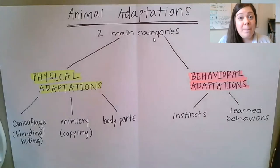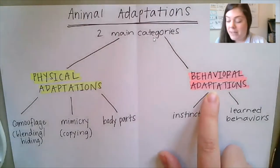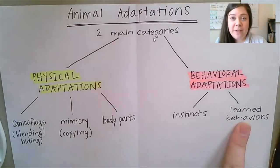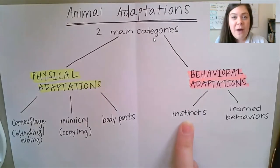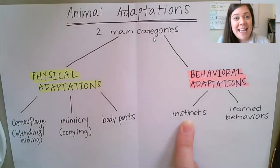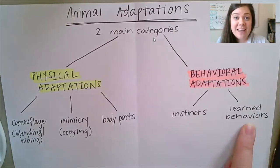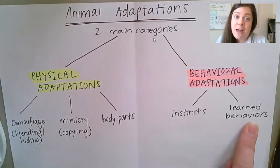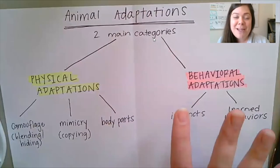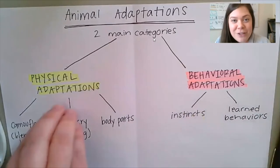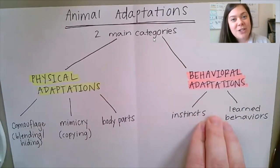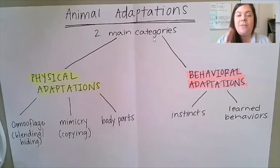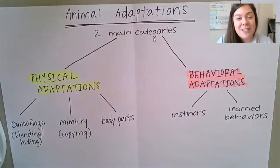Today we dove in specifically to some behavioral adaptations and learned that there are two very clear categories. You have instincts that are built into your brain and DNA — things that you and other animals know how to do without having to be taught. Learned behaviors, on the other hand, are behaviors or actions that do need to be taught. Without either of them, animals would not be able to survive. That goes back to that broader picture about animal adaptations: without those physical adaptations and without those behavioral adaptations like instincts and learned behaviors, animals wouldn't be able to find food, water, shelter, or protect themselves. And that's why animal adaptations are so important to the way nature works.